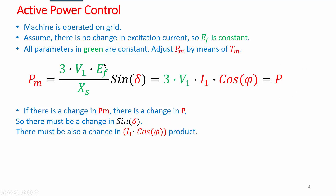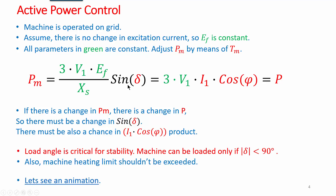Since the green-labeled terms (EF, V, Xs) are constant, any change in applied mechanical power PM must be compensated by a change in the sin δ term. On the right-hand side, the I cos φ term must change to compensate the power change. The loading angle δ is critical because machine stability requires δ less than 90 degrees. There is also a machine heating limit that must not be exceeded.